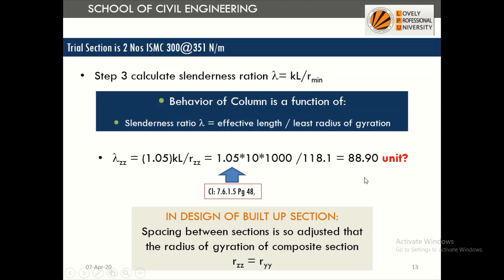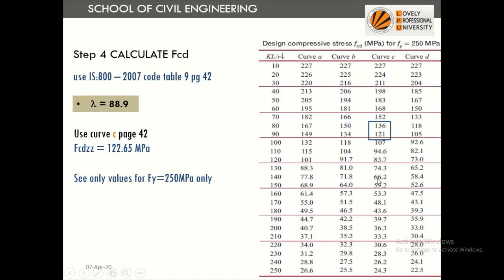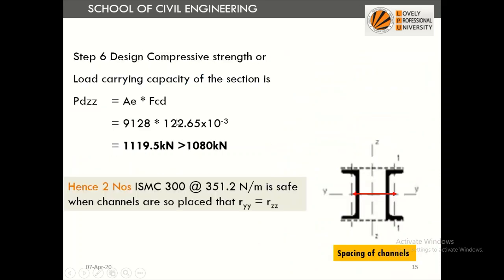Slenderness ratio lambda is a unitless quantity. With lambda equal to 88.9 and curve C for Fe415, using Table 9 page 42, we interpolate: at lambda 80, FCD is 136 MPa; at lambda 90, FCD is 121 MPa. For lambda 88.9, FCD is approximately 122.65 MPa. Multiplying by the effective area gives the load carrying capacity, which is greater than 1080 kN — confirming two ISMC 300 sections are safe.